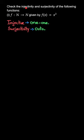The question asks to check the injectivity and surjectivity of the following function: f from N to N given by f(x) = x². Injective means one-one, and surjective means onto. These are just different names.